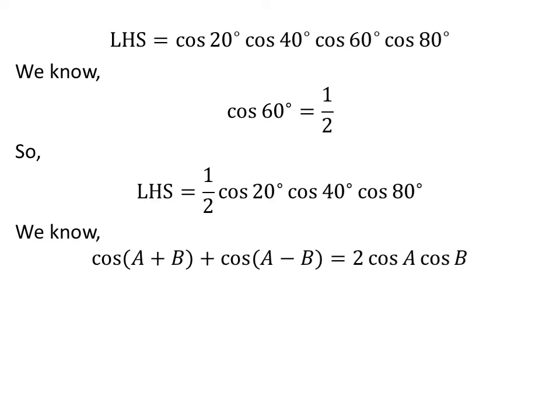We know the famous trigonometry identity: cosine of (a plus b) plus cosine of (a minus b) is equal to 2 times cosine of a times cosine of b. The verification of this identity has been explained in the video appearing in the upper right corner of this video. The link of the video is also given in the description section.